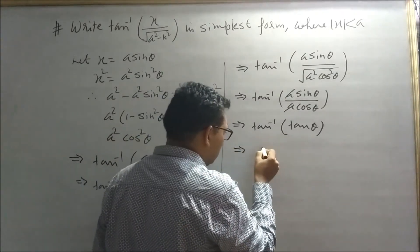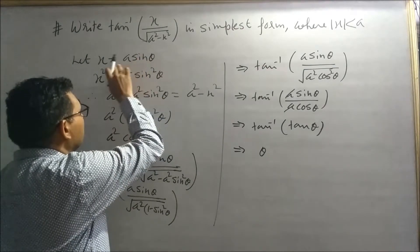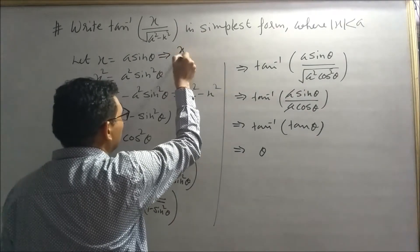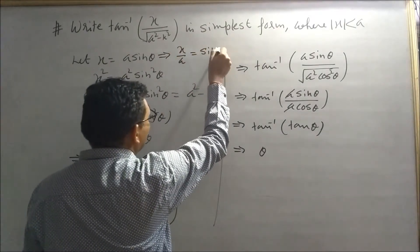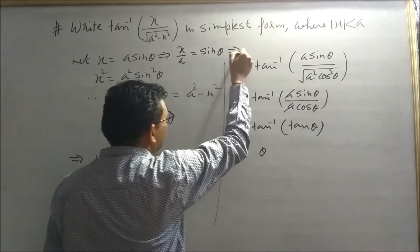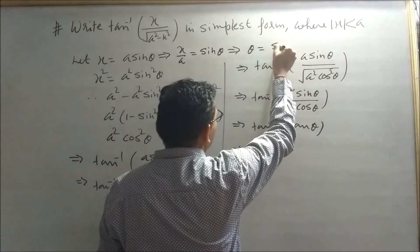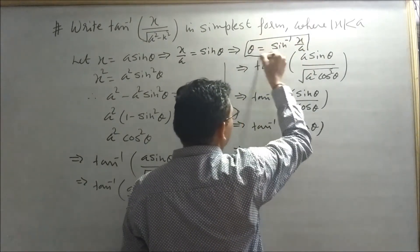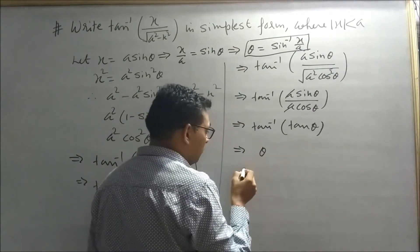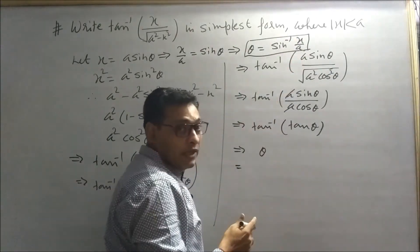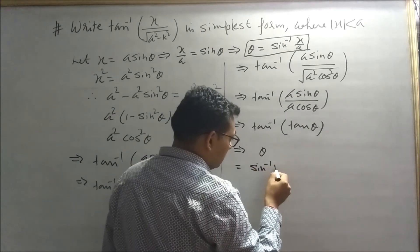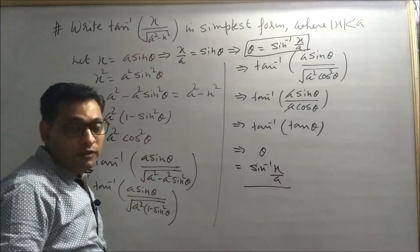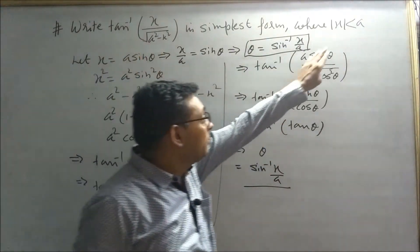Now we recover θ. We had supposed x = a sin θ, which implies x/a = sin θ, therefore θ = sin⁻¹(x/a). Replacing θ, the final answer is sin⁻¹(x/a). This is the simplest form of the given inverse trigonometric function. The condition |x| < a is the domain of this function.